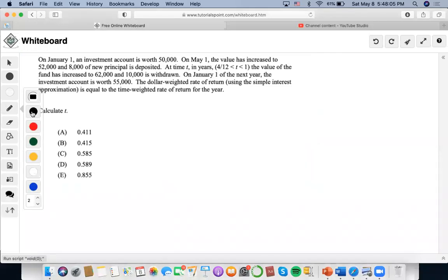Hi, so for this problem it says that on January 1 an investment account is worth $50,000. The value has increased, some are withdrawn, deposited, and towards the end the dollar rate of return using simple interest approximation is equal to the time rate of return. So let's start with the time rate of return.